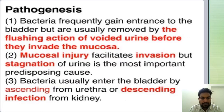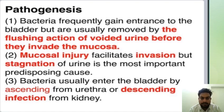Pathogenesis: bacteria frequently gain entrance to the bladder but are usually removed by the flushing action of voided urine before they invade the mucosa. Mucosal injury facilitates invasion, but stagnation of urine is the most important predisposing cause. Bacteria usually enter the bladder by ascending from the urethra or by descending infection from the kidney.